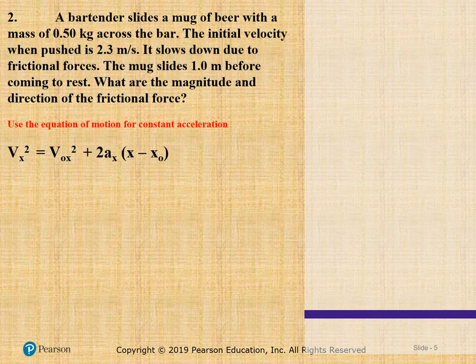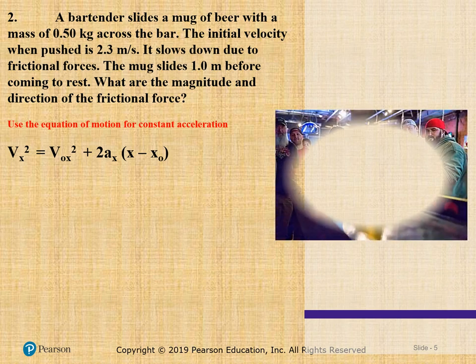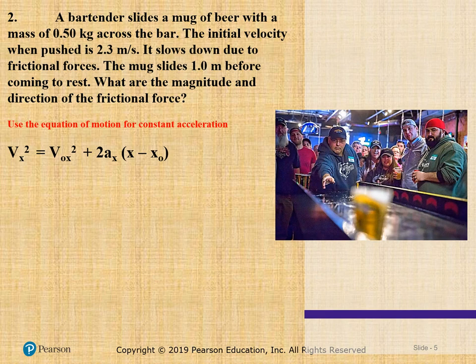Next problem: a bartender slides a mug of beer with a mass of 0.50 kilograms across the bar. The initial velocity is 2.3 meters per second. It slows down due to frictional forces and slides one meter before coming to rest. To find the magnitude and direction of the frictional force, we use the kinematic equation for constant acceleration.